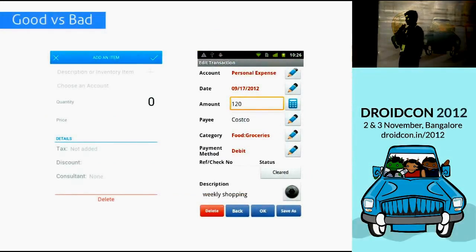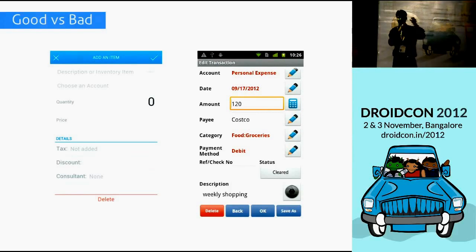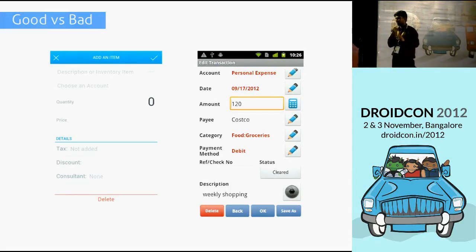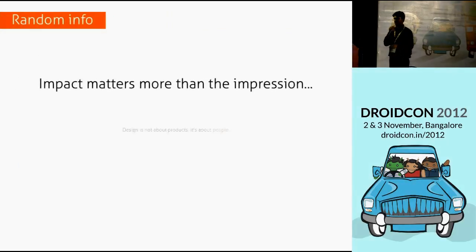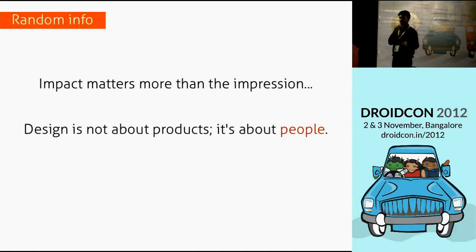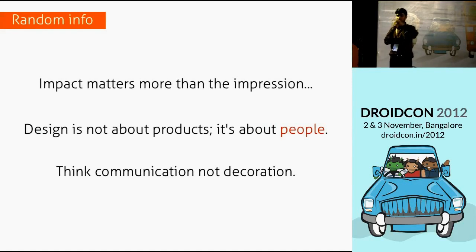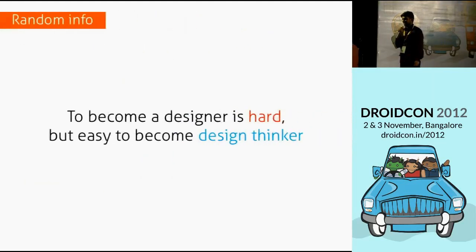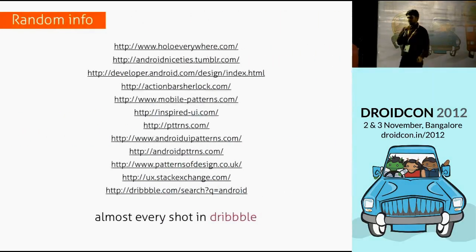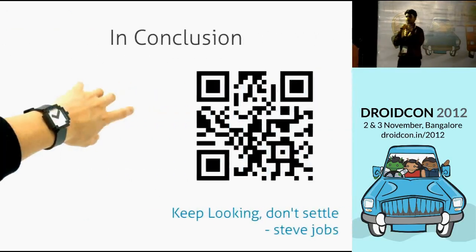Good versus bad design: the last version of Android 2.3 had big, bulky buttons everywhere. Now it's all minimalized — very simple and intuitive. Key takeaways: impact matters more than impression; design is not about products, it's about people; think about communication rather than decoration — how you communicate with your user is the most important thing. Don't hesitate to steal — go to Dribbble and borrow those little design elements. To become a designer is hard, but to be a design thinker is easy. Entrepreneurs and hackers can become design thinkers with just common sense. There are a lot of resource links — you can scan the QR code to get the whole presentation.